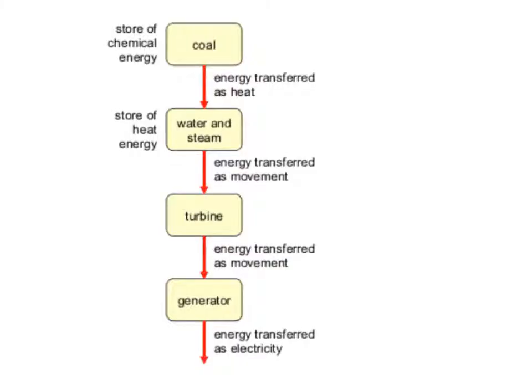As you can see, this is a flow diagram of the energy transfers. You've got your chemical energy in the coal or the fuel. This could be nuclear energy, or it could be natural gas, which has chemical energy stored.